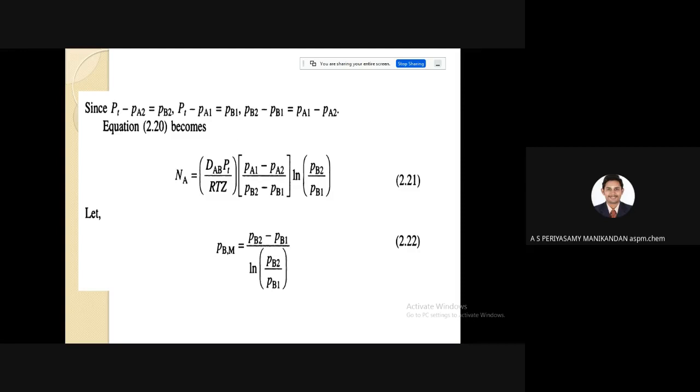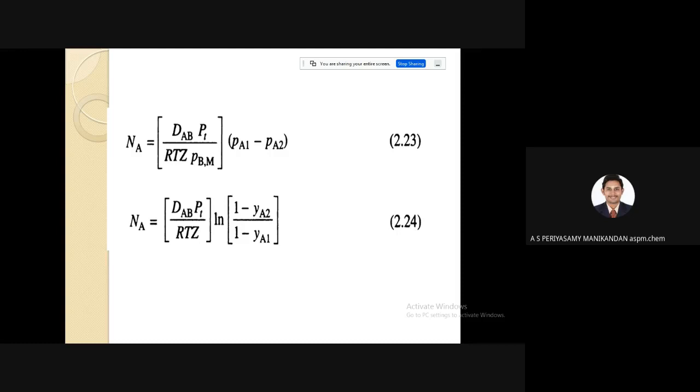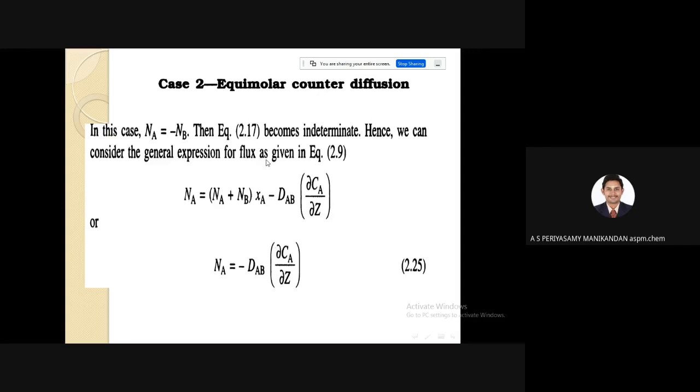It can be again written as the total pressure Pt equals partial pressure of the component A and B. Pt equals Pa2 plus Pb2 or Pa1 plus Pb1. By using this relationship you can modify. You will get this Pbm, which is the logarithmic mean difference in terms of partial pressure of the component B at position 2 and position 1. This is the final equation in terms of this pressure. This can also be written in terms of ya1, ya2, where small y means mole fraction of component A at position 1 and position 2.